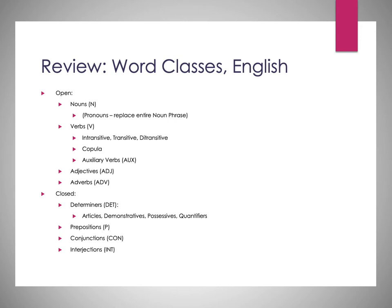For our closed classes, we have determiners. The label DET or just D for determiner is something we use for articles, demonstratives, possessives, and quantifiers — covering all of those things as determiners. So we don't label things as articles or demonstratives; we label them all as determiners. We can only have one of them in the places they can go in a sentence, so they're all filling that determiner slot. And then we have prepositions, usually labeled with the letter P, conjunctions — which you might see as CON or CONJ — and interjections as well.